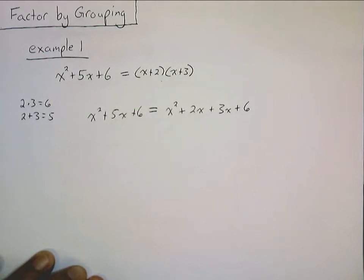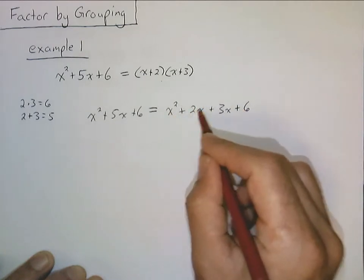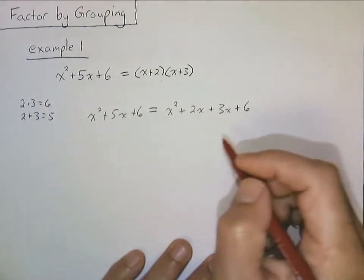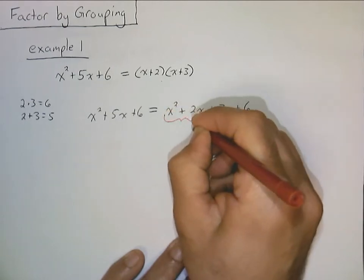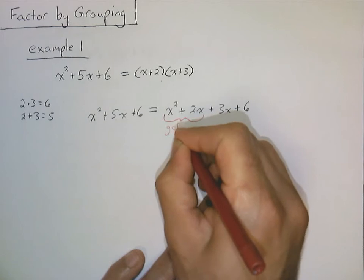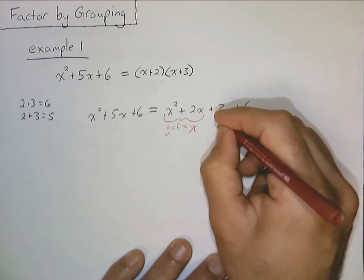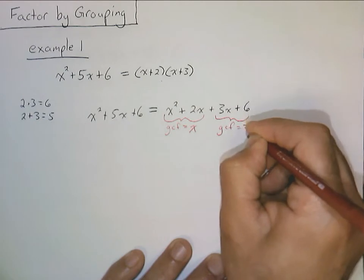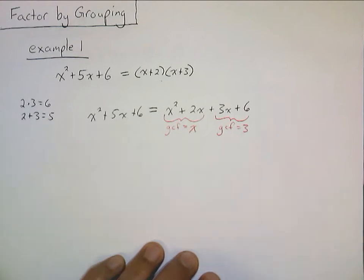Now what we're going to observe here: we're going to group these first two terms together, and we're going to group these last two terms together, and we're going to see what the GCF is in each of those groups. For these first two terms, we see that the GCF is, of course, equal to x. And for these last two terms, the GCF is equal to 3. If we want to keep everything straight, we'll rewrite each of the terms so we can see the GCF in each of them.